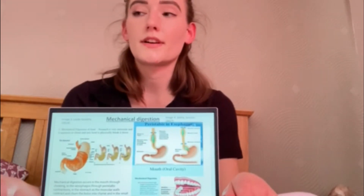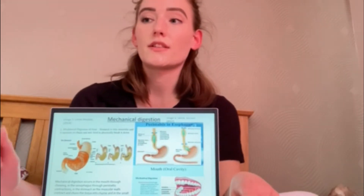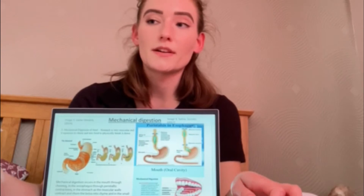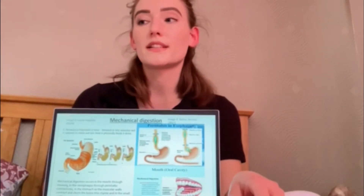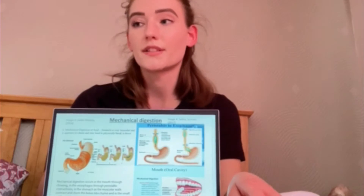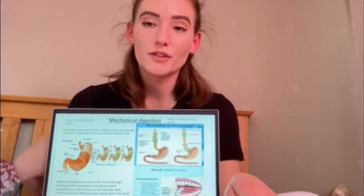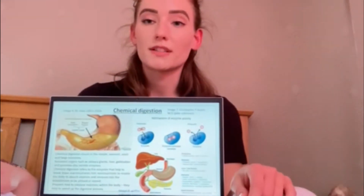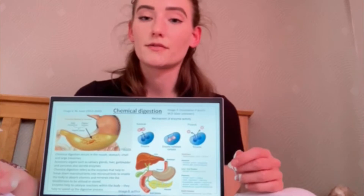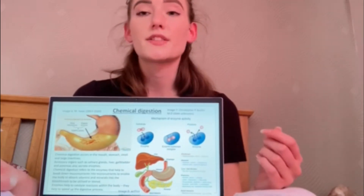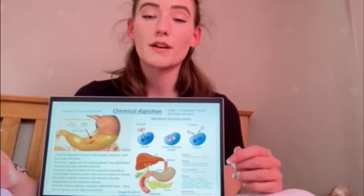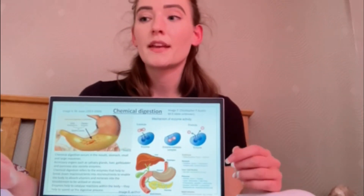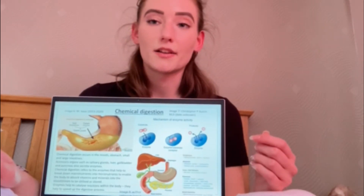Mechanical digestion plays a vital role in the process of digestion, starting in the mouth where teeth break down food into more digestible pieces through mastication. It can also be witnessed through peristalsis in the oesophagus, small intestine and large intestine, and through maceration in the stomach where the bolus is continuously churned using the muscular wall. Chemical digestion also begins in the mouth, where the brain triggers the production of saliva and enzymes such as salivary amylase, which are secreted through the salivary glands. Enzymes during chemical digestion are vital for the breakdown of macronutrients into micronutrients for the body to absorb vitamins and minerals. Chemical digestion occurs in the mouth, stomach, small intestine and large intestine.